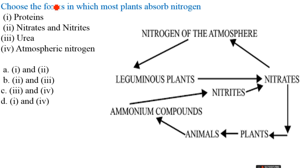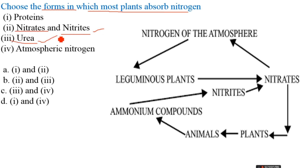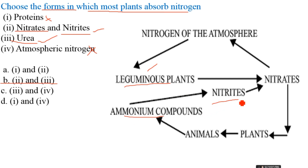The forms in which most plants absorb nitrogen — already covered in the nitrogen cycle. Nitrates and nitrites are easy for plants to absorb. Urea from synthetic fertilizers is also converted. In the nitrogen cycle: atmospheric nitrogen is fixed, converted to ammonia, then to nitrate through nitrification, absorbed by plants, and returned through decomposition of animal and plant matter back to ammonia and nitrate.